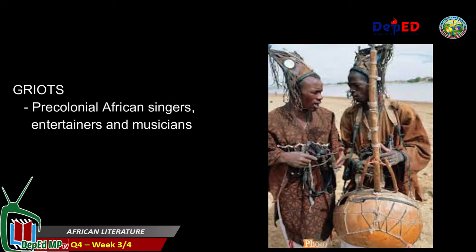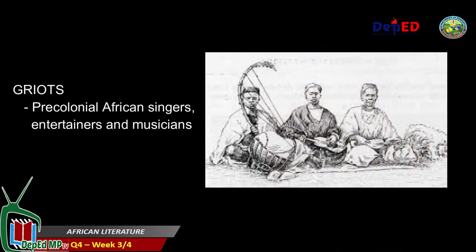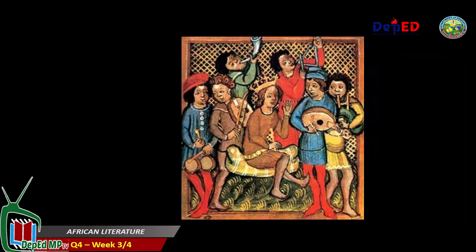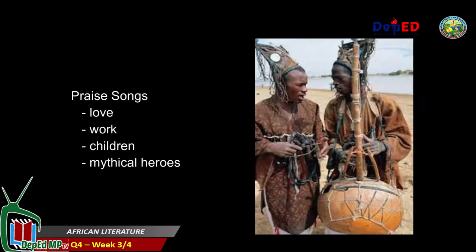Back to African orature — original African songs were performed by ancient praise singers called griots, who were also the musicians, storytellers, and entertainers of pre-colonial Africa, quite similar to the minstrels or troubadours of medieval Europe. The praise songs performed by these griots were about love, work, children, and mythical heroes.